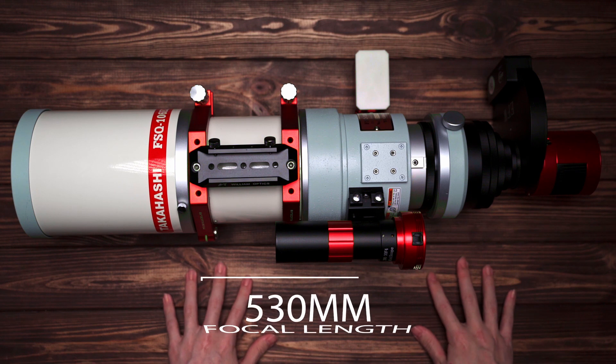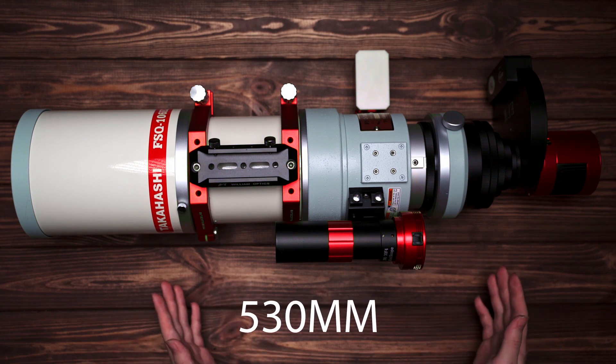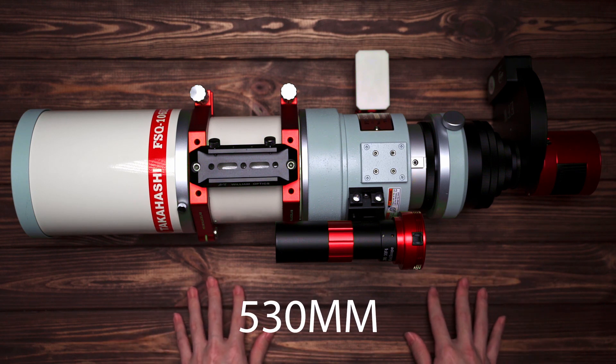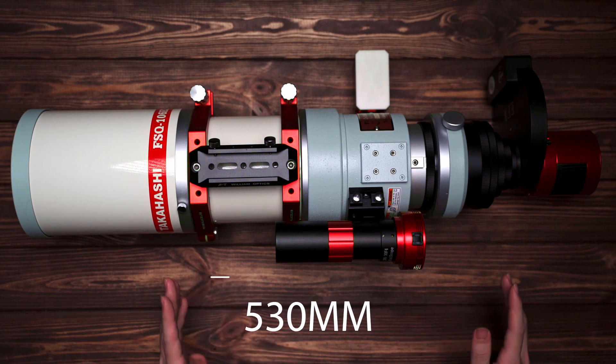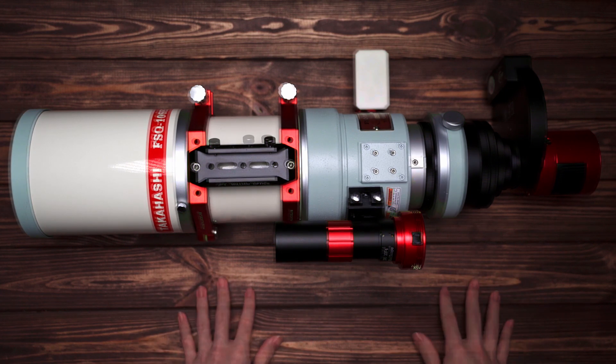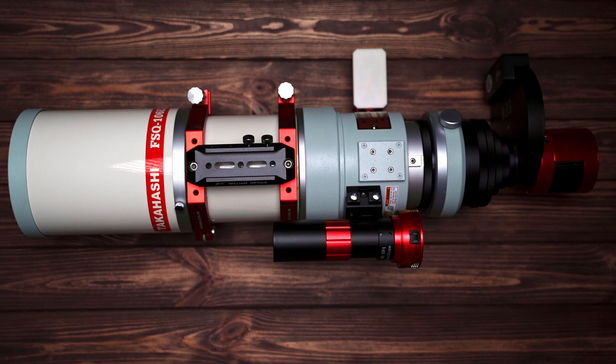The focal length of FSQ106 is 530mm, which is very good for a lot of nebulae. It's not too short or too long. And if you think sometimes the view is a little bit too narrow for some huge subjects like North America Nebula, you can always use a reducer. And Takahashi has multiple options for reducers.